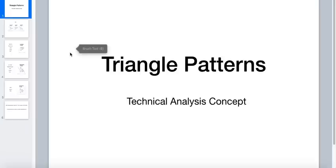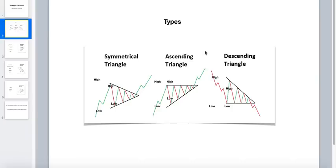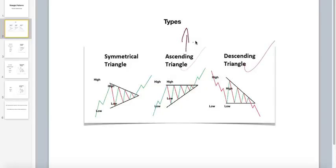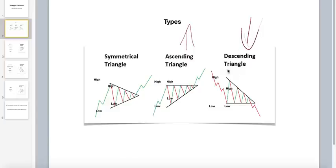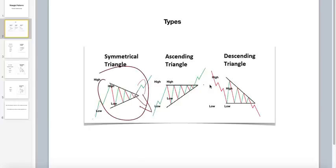I will discuss three types today: symmetrical triangle, ascending triangle, and descending triangle. Ascending means going up — you are expecting an uptrend breakout. Descending means falling down — you are expecting the price to fall. In symmetrical, it depends on how the price came in — it can break up or it can break down. We will see how each one works.